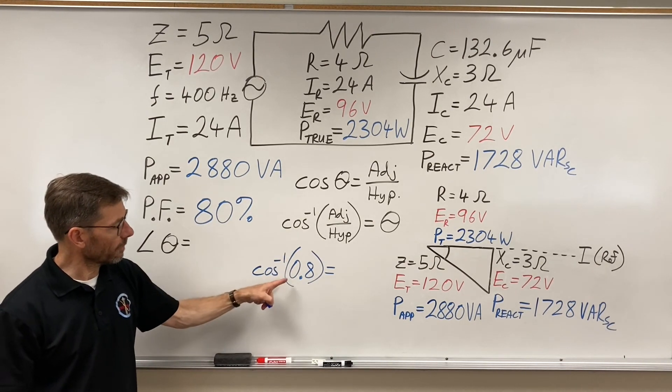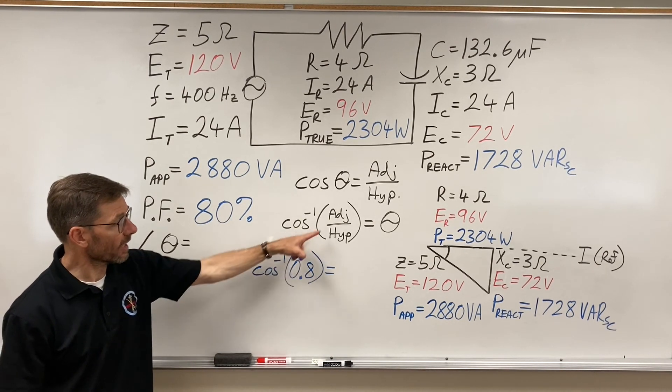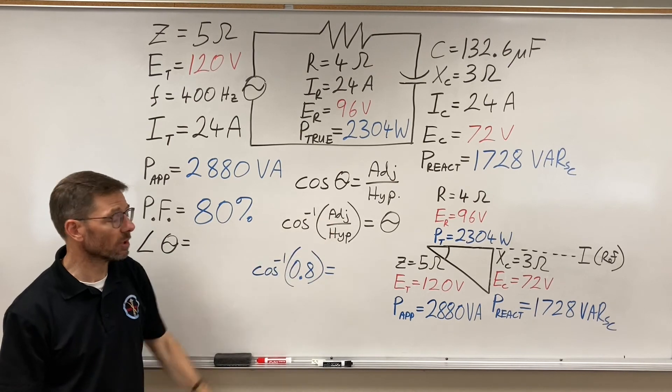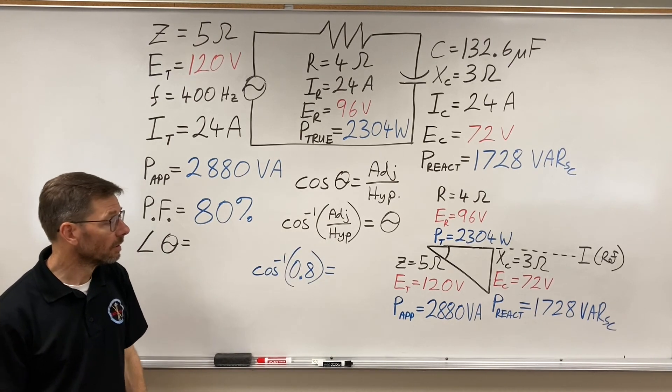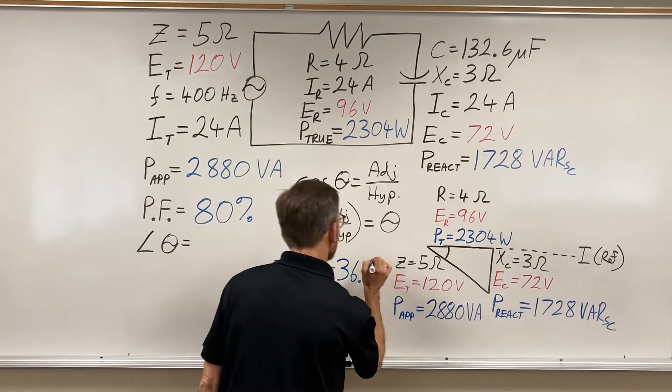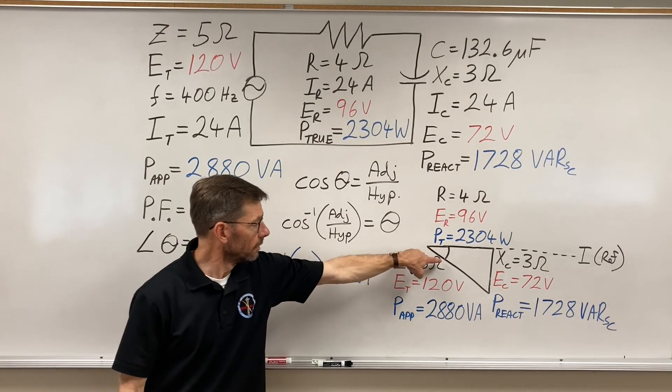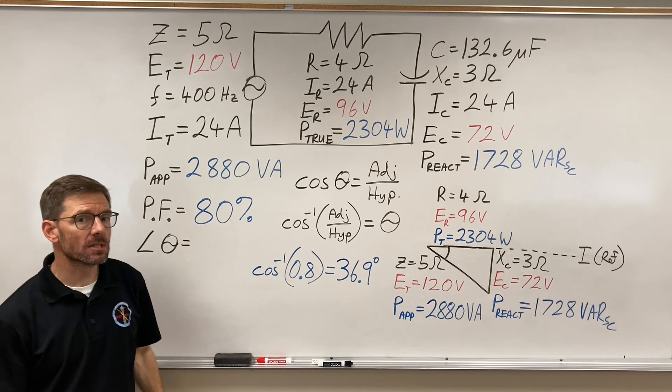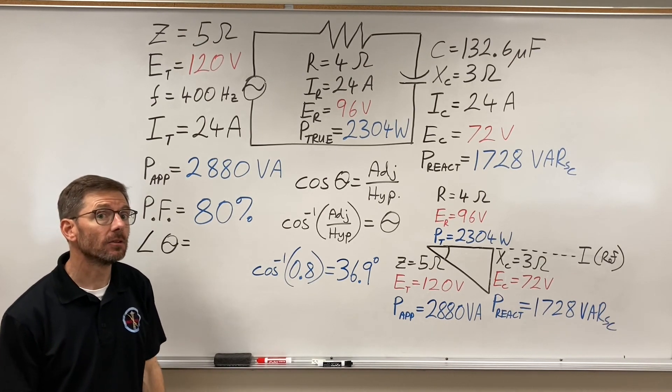Cosine negative 1 at 0.8, or like I said, you can put a division problem in there. And what do we end up with? Plug it in. This angle is 36.9 degrees.